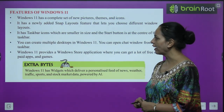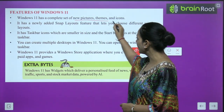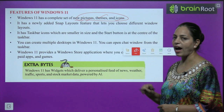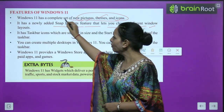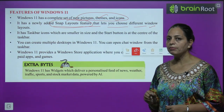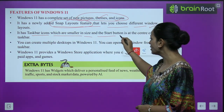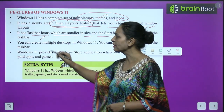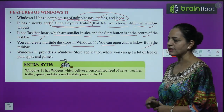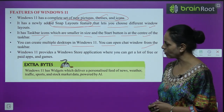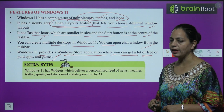Now let's see the features of Windows 11. Windows 11 has a complete set of new pictures, themes and icons. Second, it has a newly added snap layout feature that lets you choose different window layouts. Third, it has taskbar icons which are smaller in size and the start button is at the center of the taskbar. You can create multiple desktops in Windows 11. You can open a chat window from the taskbar. Windows 11 also provides a Windows Store application where you can get many free or paid apps and games.